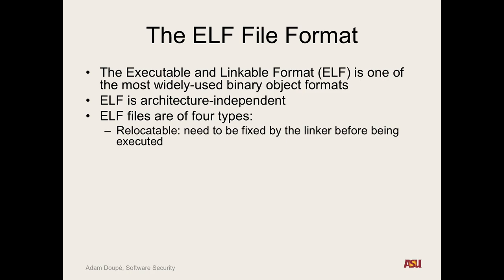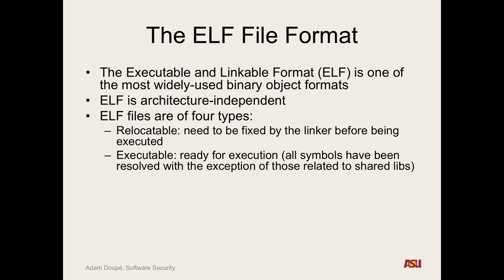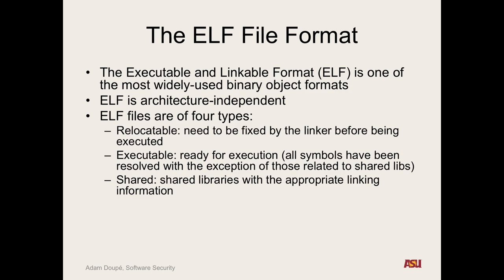Executable is the type we're most familiar with — all symbols are resolved except for those used by shared libraries through dynamic linking. A .so file is a shared library, containing information about what symbols it exports and how to call and load it at runtime — this is another type of ELF format. Finally, the fourth type is a core dump.